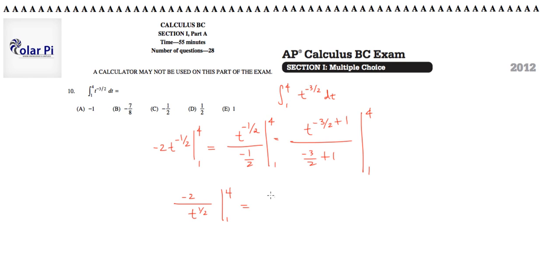And then we know to the 1 half power means square root of whatever it is that is being put to the 1 half power. So we know that this means negative 2 over root t. And then it's evaluated at 1 and 4.